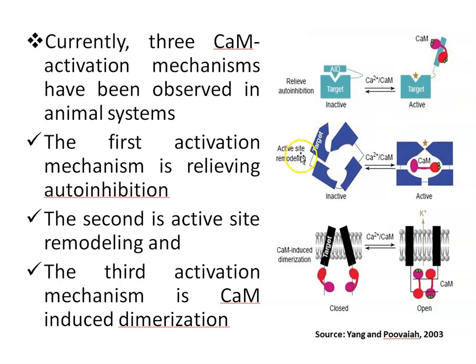The second activation mechanism is active site remodeling. Upon calmodulin binding to the inactive form of the enzyme, a helical domain of anthrax adenylyl cyclase enzyme — or edema factor — undergoes a 308° rotation away from the catalytic core, which stabilizes the disordered loop and leads to enzyme activation.